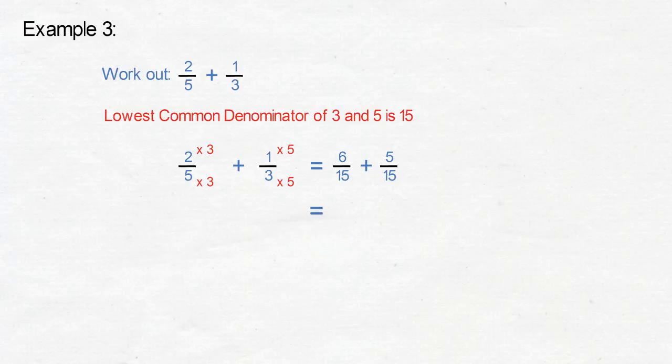Now we add the numerators. 6 add 5 equals 11. 2 fifths add 1 third equals 11 over 15.